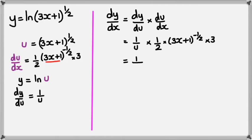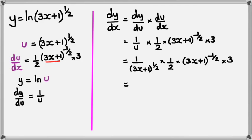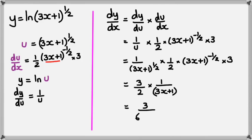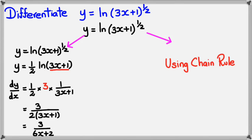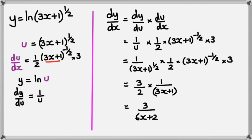Replacing u with (3x+1)^(1/2): the (3x+1)^(-1/2) in the numerator moves to the denominator as (3x+1)^(+1/2), combining with the existing (3x+1)^(1/2) to give (3x+1)^1. This simplifies to 3 divided by 2(3x+1), which equals 3/(6x+2) — the same answer as the short method.